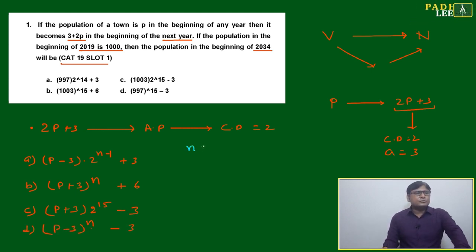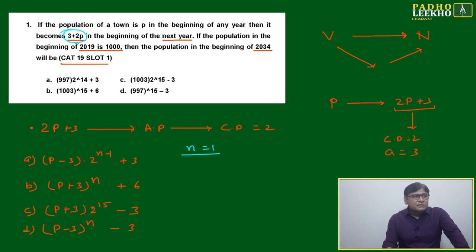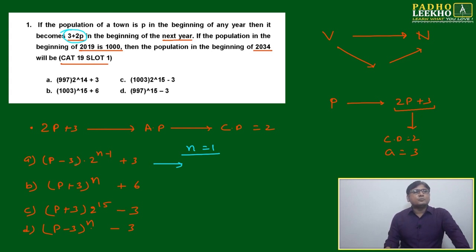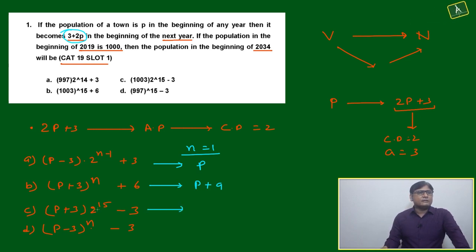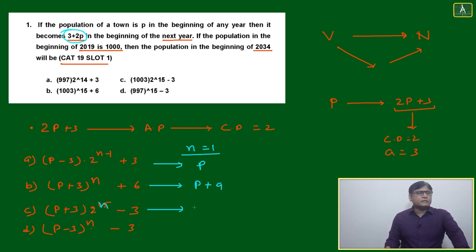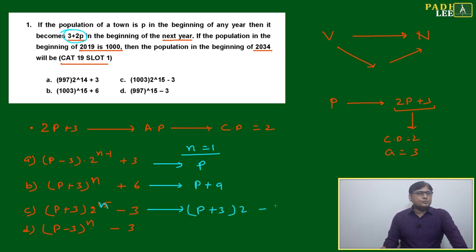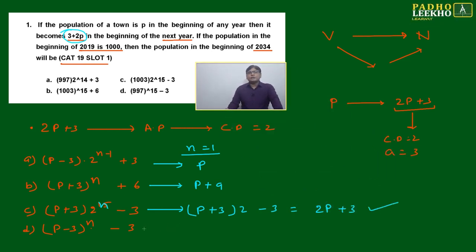What we have to do is put n equal to 1. If n equals 1, the expression must give 3 plus 2P. Checking option A: 2 to the power 0 is 1, so P minus 3 plus 3 equals P itself — not correct. Option B: P plus 3 plus 6 equals P plus 9 — not correct. For option C with n equal to 1, it gives P plus 3 times 2 minus 3, which equals 2P plus 3. This is the correct option.